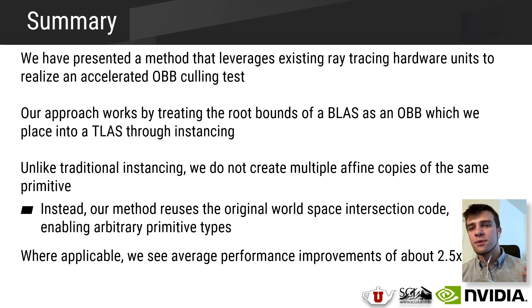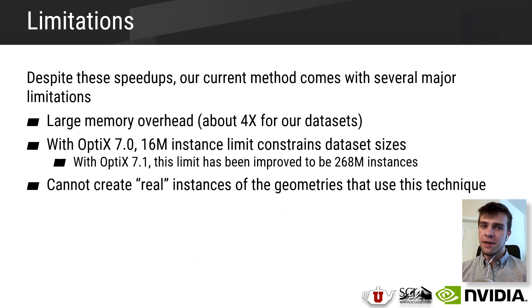Despite these speedups, our current method comes with several major limitations. First, our method comes with this massive memory overhead of up to 4x compared to the reference version. And for some of our data sets, that speedup might be worth the memory trade-off, but for many others that could be way too prohibitive. And then in addition to memory overhead, the maximum reasonable model size is also limited by how many instances OptiX allows in its instance acceleration structure. As of this work, the limit was 16 million instances, and although the limit has been relaxed since OptiX 7.1 came out, this still poses a hard limit on what our method can do. And then since we're already using OptiX's instancing capability to create our OBBs, we also currently can't create real instances of the geometries that use this technique. For example, we can't really create several instances of Autumn with our approach without losing our hardware accelerated OBB test.